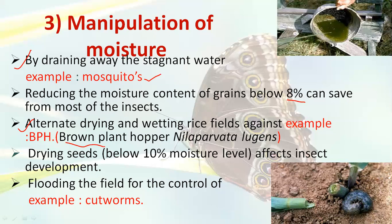In rice fields, the major pest is the brown plant hopper, commonly called BPH. If manipulation of moisture is done through alternate drying and wetting in rice fields, the brown plant hopper can be controlled. Drying seeds to below 10 percent moisture level also affects insect pest populations. Flooding practices in the field cause hidden larvae under the soil surface to come out and be exposed to predators like birds, destroying them.